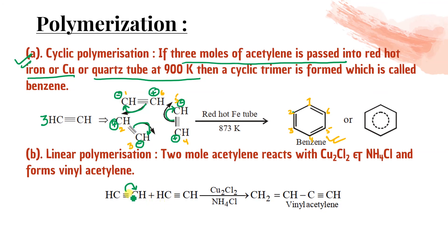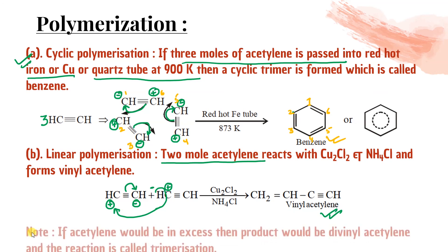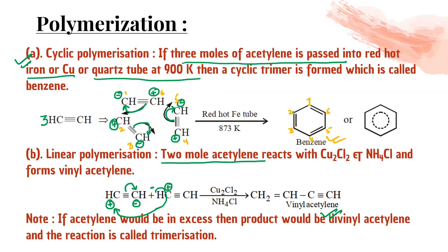Mechanism of dimerization: one pi bond breaks giving minus and plus charges; H (being a better leaving group) shifts, forming CH₂=CH-C≡CH — vinyl acetylene. If two moles react, vinyl acetylene forms; if n moles combine, polyacetylene forms. If acetylene is in excess, products are vinyl acetylene and divinyl acetylene — this reaction is called trimerization.